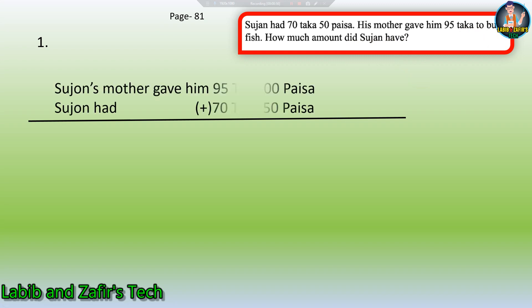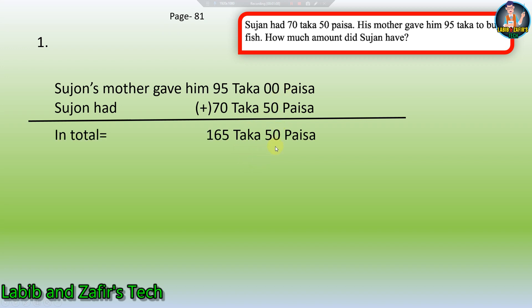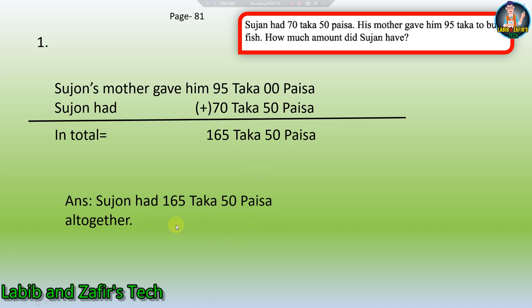Let us see the solution. Shuzun's mother gave him 95 Taka 0 Persha, and Shuzun had 70 Taka 50 Persha. We have to add these amounts. 50 plus 0 equals 50, and 95 plus 70: 5 plus 0 is 5 and 9 plus 7 is 16, giving us 165 Taka 50 Persha. Answer: Shuzun had 165 Taka 50 Persha altogether. This is our first word problem.